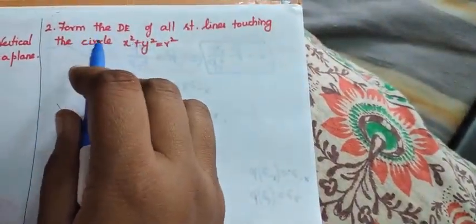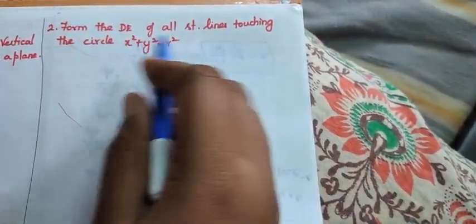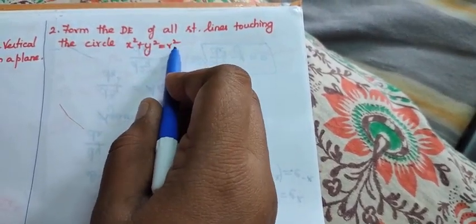Now, come for the second question. Form the differential equation of all straight lines touching the circle x square plus y square equal to r squared.